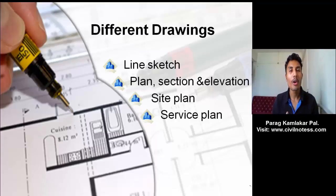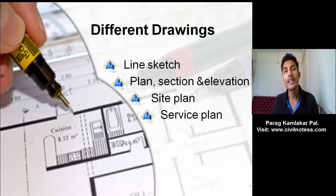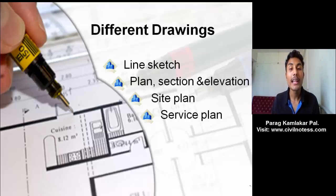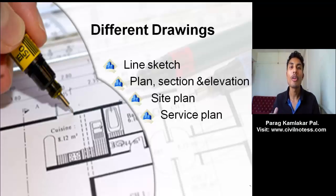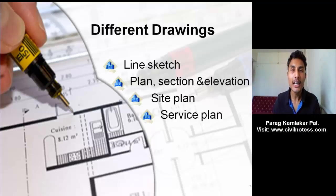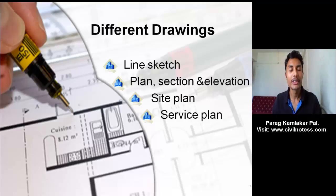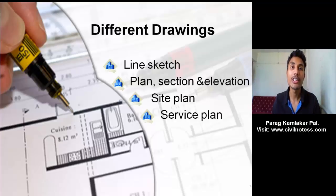Line sketch is nothing but the drawing required before construction to get a particular idea regarding what you need to construct. Plan, section and elevation are the three important parameters of building drawing, where you can simply get the idea and execute the particular plan on site. Section and elevation are important for the building because you get to know what is the thickness, what is the width, what is the height — all these things you can get from section and elevation only. Site plan is very important and helpful for the labor and site team executing the work.